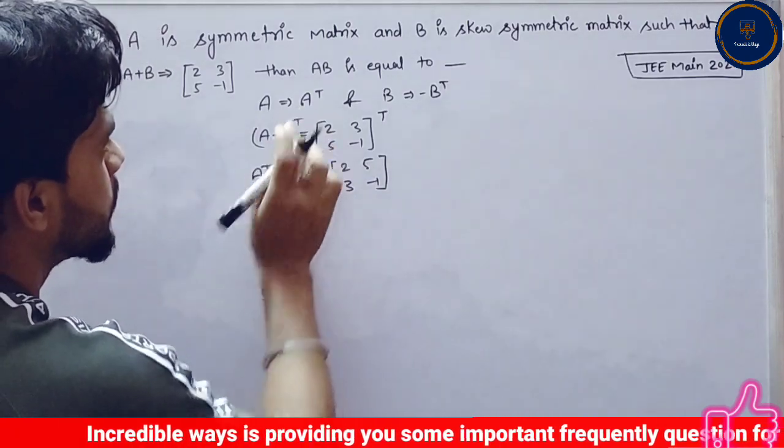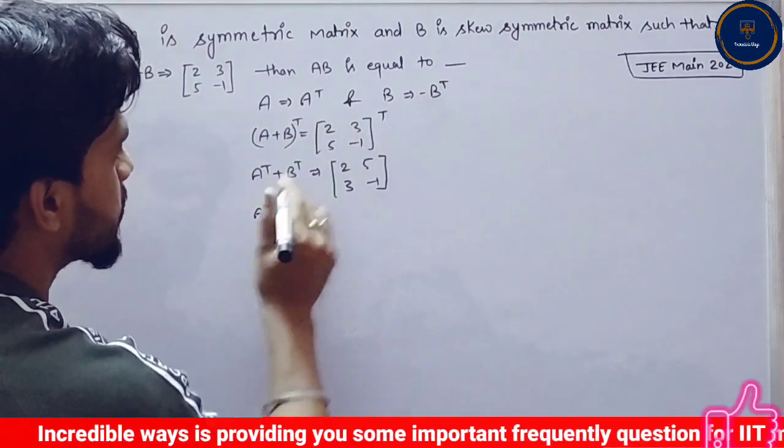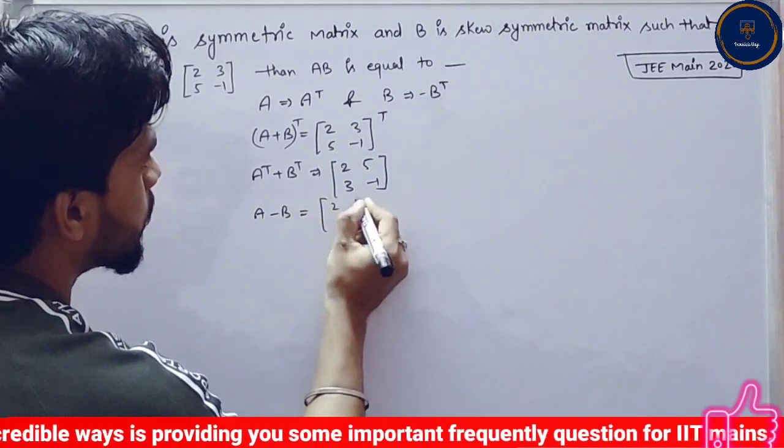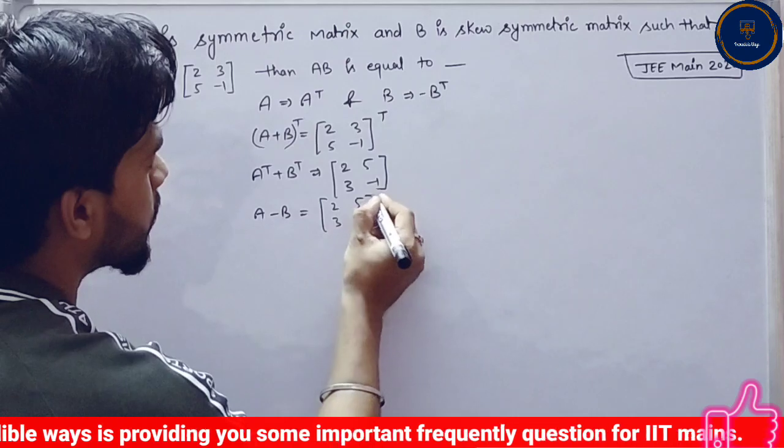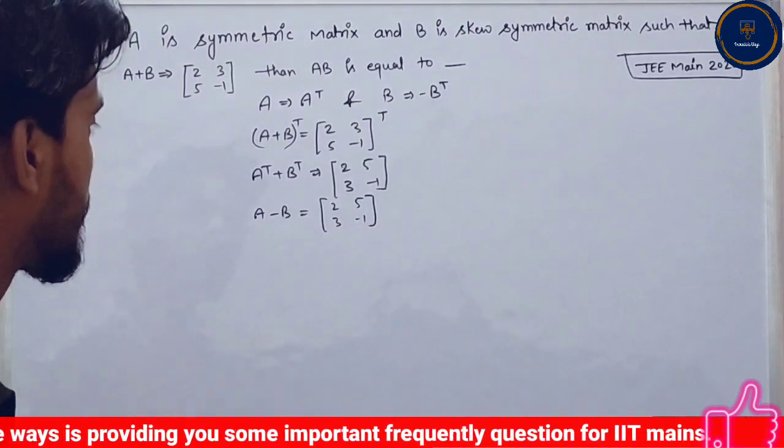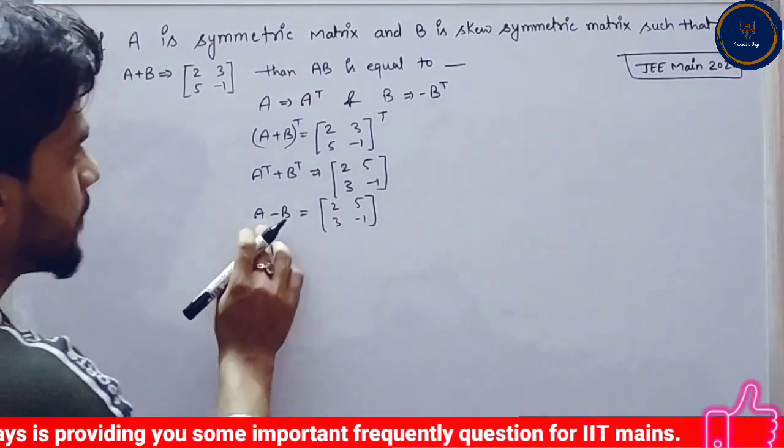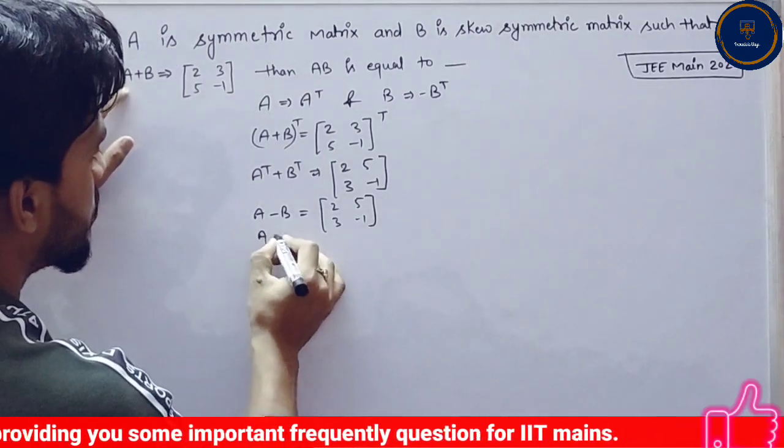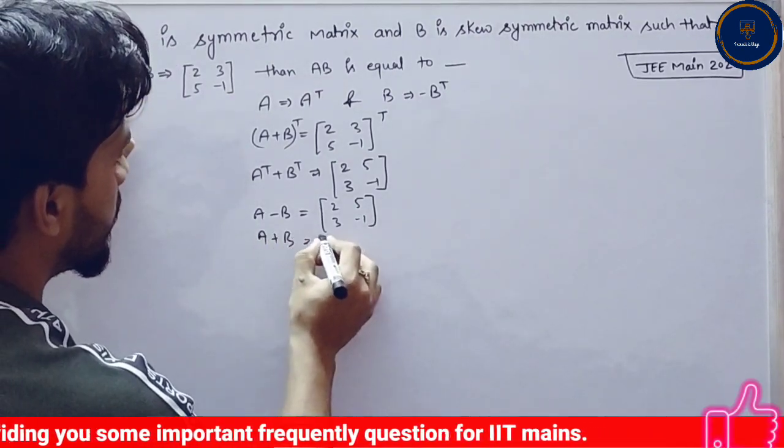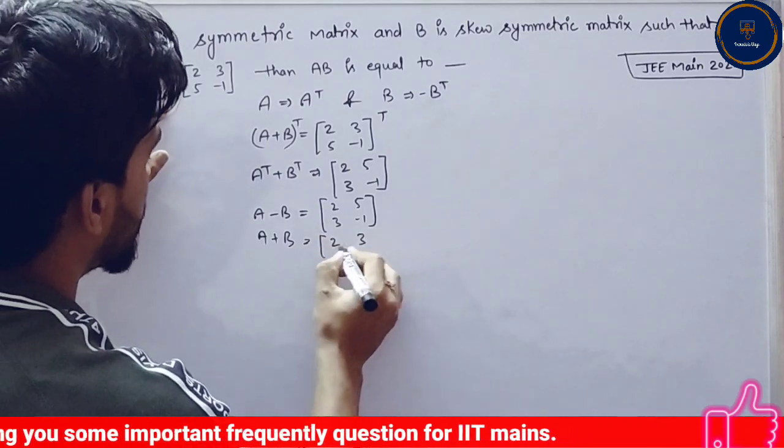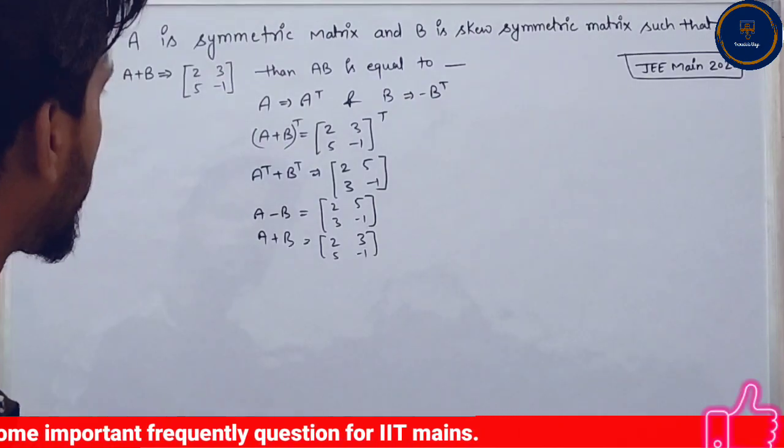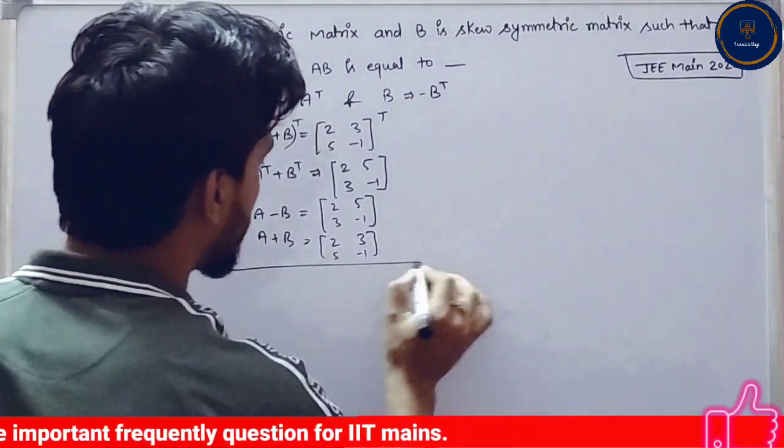Now if I substitute, A transpose minus B transpose equals [2, 5; 3, -1]. This is A plus B. A plus B is given here. We can solve it.